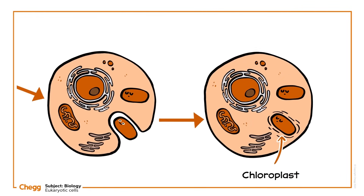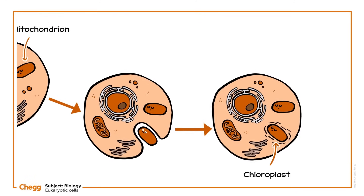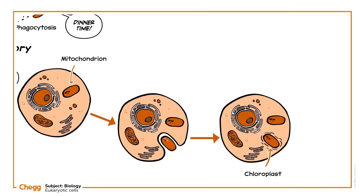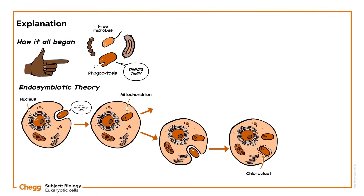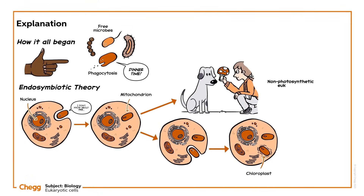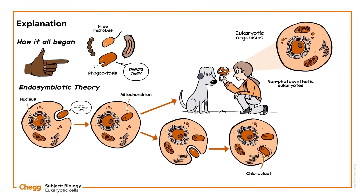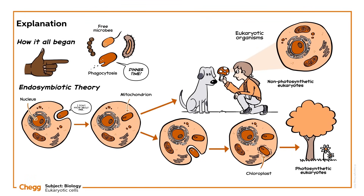The host cells that evolved to have a nucleus and mitochondria, but no chloroplasts, gave rise to non-photosynthetic eukaryotes like fungi and animals. The cells that evolved to have nuclei, mitochondria and chloroplasts gave rise to photosynthetic eukaryotes like plants.